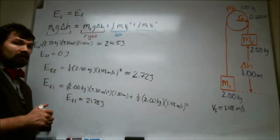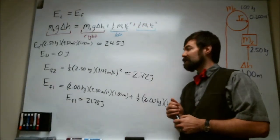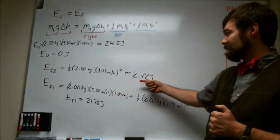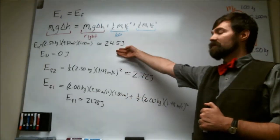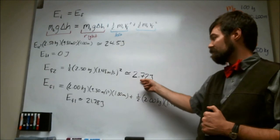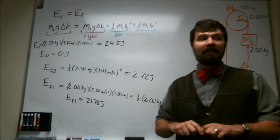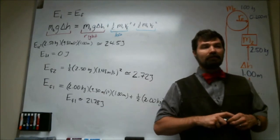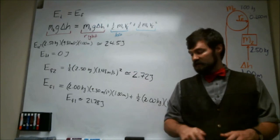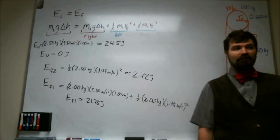So as a last little double check to make sure that everything has been done correctly, we can add the final energies together and see if they're equal to the initial energy. And in fact 2.72 plus 21.78 gives me 24.5. So we've successfully conserved energy in this problem. Okay, so that's it for the ideal version of the Atwood's machine.